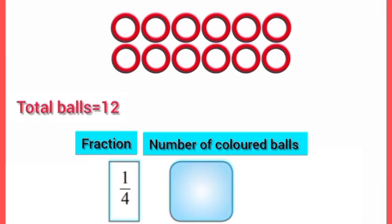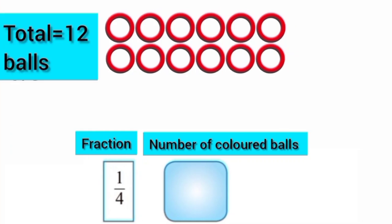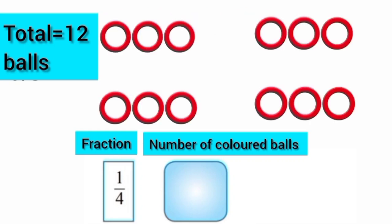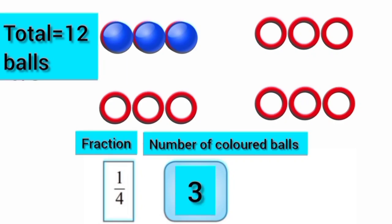Now the given fraction is 1 upon 4. It means we will divide these balls into 4 equal parts and we will color one part of it. Dear students, we have divided these balls into 4 equal parts. Let's color one part of it. Now we have colored one part. The number of colored balls is 3.